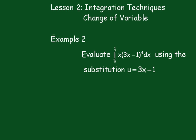Here's the second example. Evaluate the integral from 0 to 1 of x times (3x minus 1) to the 4th dx, using the substitution u equals 3x minus 1. You might like to pause the video and have a go at this one yourself.